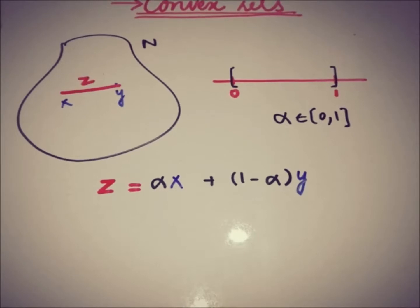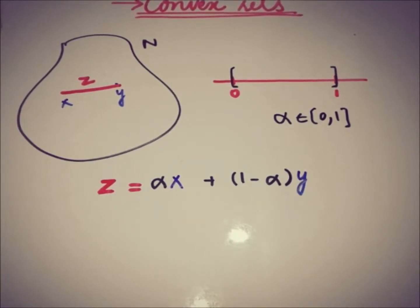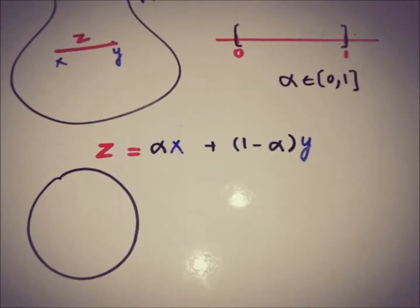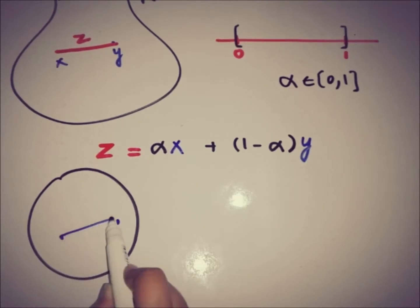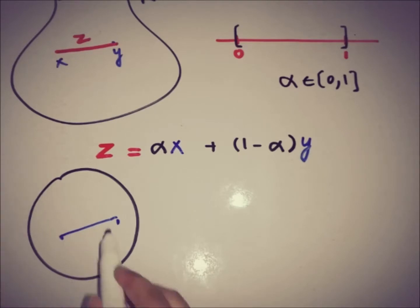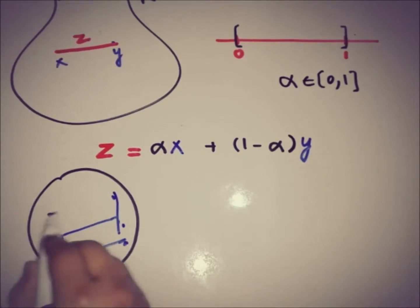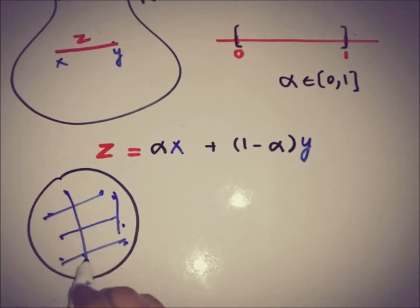We can represent it with endpoints x and y. Now, talking about geometrically or physically, how can we say that any set or surface is convex? If we have a surface or area of this type, and all of the possible line segments joining two points lie within that surface — that is, if I am taking two random points and the line segment is within the surface — then all of the possible line segments are within this surface.